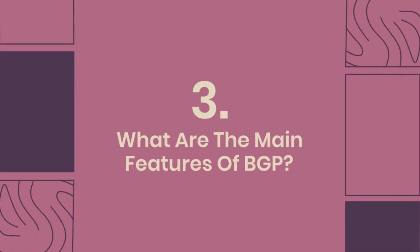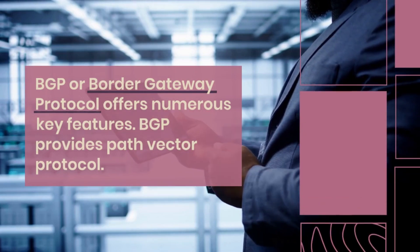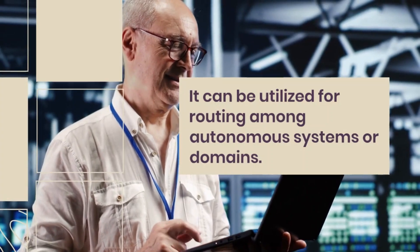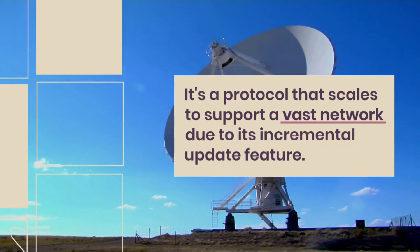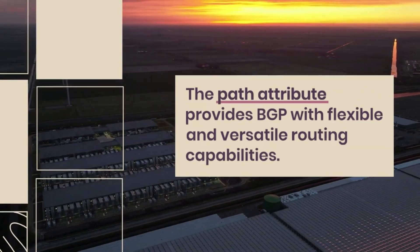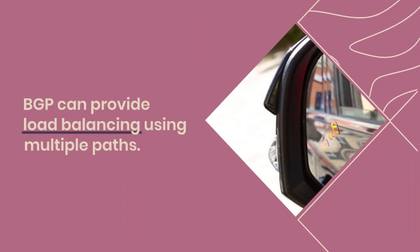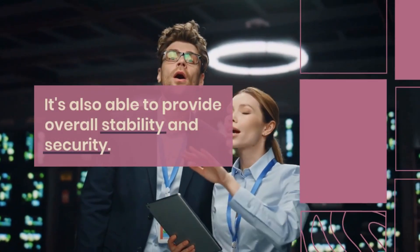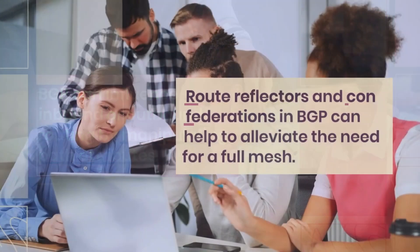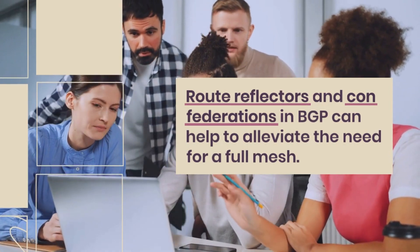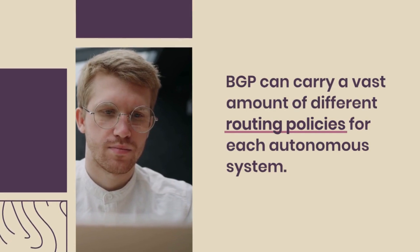What are the main features of BGP? BGP provides a path vector protocol and can be utilized for routing among autonomous systems. It scales to support vast networks due to its incremental update feature. Path attributes provide flexible and versatile routing capabilities. BGP can provide load balancing using multiple paths, offer stability and security, and influence inbound or outbound routing by manipulating path attributes. Route reflectors and confederations can help alleviate the need for a full mesh, and BGP can carry a vast amount of routing policies for each autonomous system.